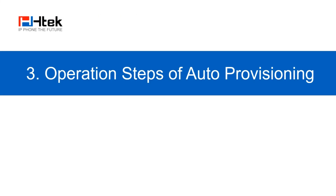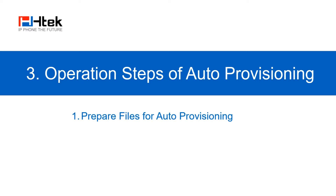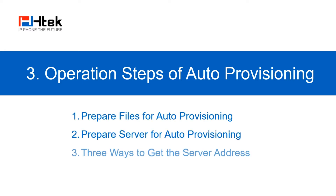Now let me explain to you how to do it. It contains four steps: prepare files for auto-provisioning, prepare server for auto-provisioning, get the server address — which can be done in three ways — and finally, execute auto-provisioning. I'm going to take you through them one by one.